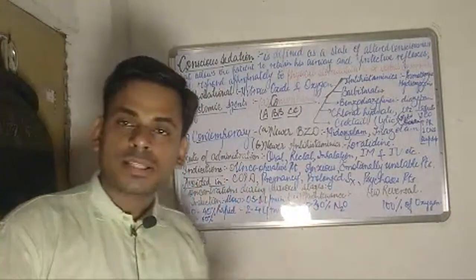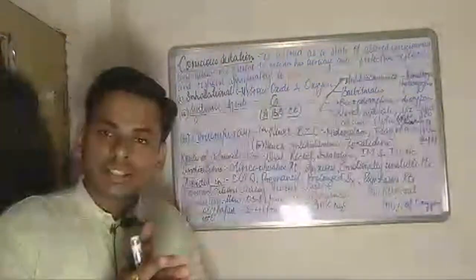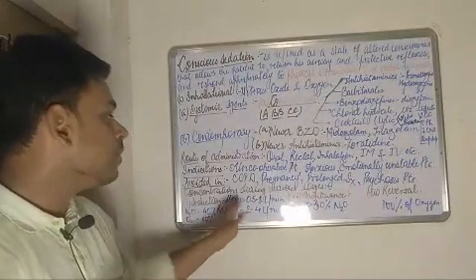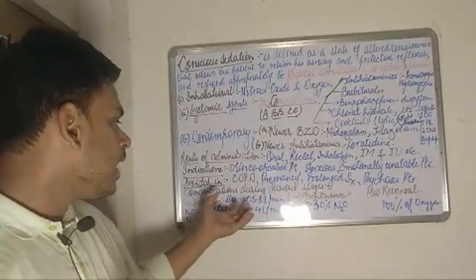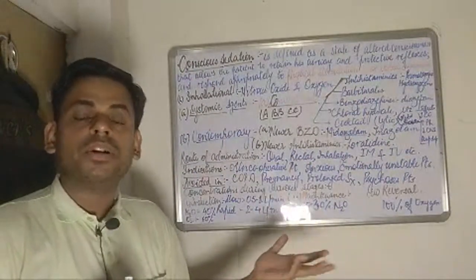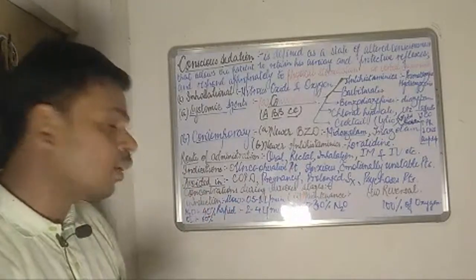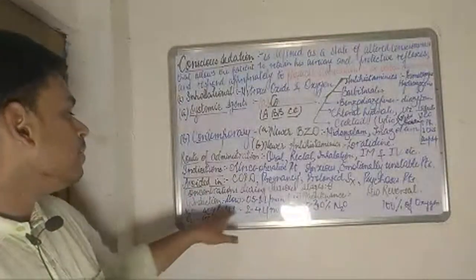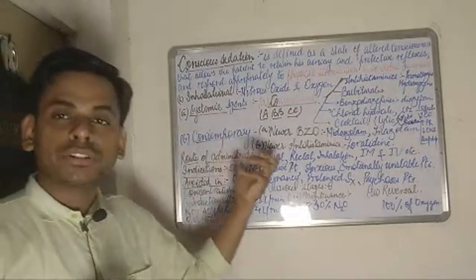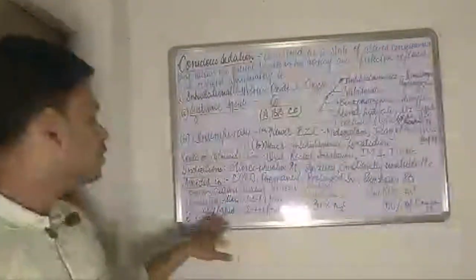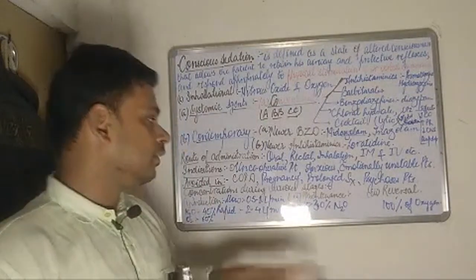For the induction dose of the nitrous oxide and oxygen inhalational technique, slow induction is carried out at 0.5 to 1 liter per minute. When rapid induction is necessary, the administration should be 2 to 4 liters per minute. The concentration ratio of nitrous oxide to oxygen during induction is 40% nitrous oxide and 60% oxygen.